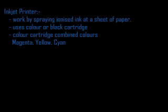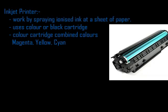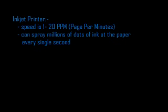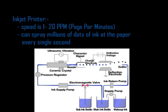The next type of printer is the inkjet printer. It works by spraying ionized ink at the sheet of paper. It uses two types of cartridges: color cartridge and black cartridge. The color cartridge has magenta, yellow, and cyan ink to create colors. The speed of the inkjet printer is 1 to 20 pages per minute. An inkjet printer can spray millions of dots of ink on paper every single second.